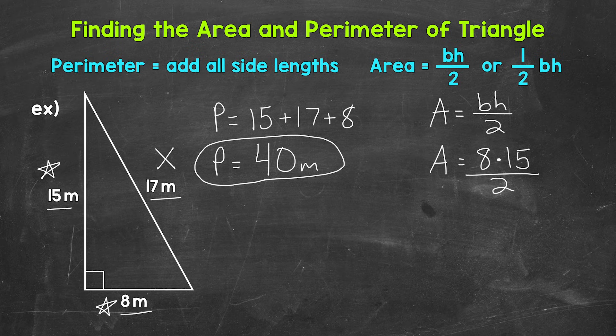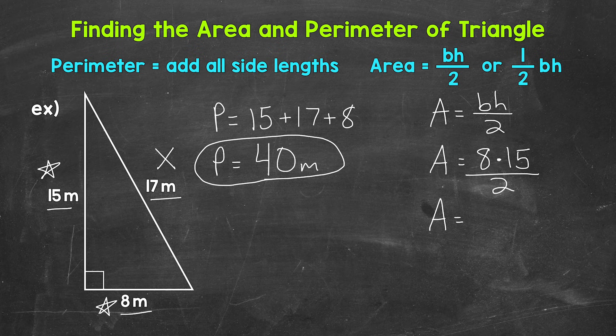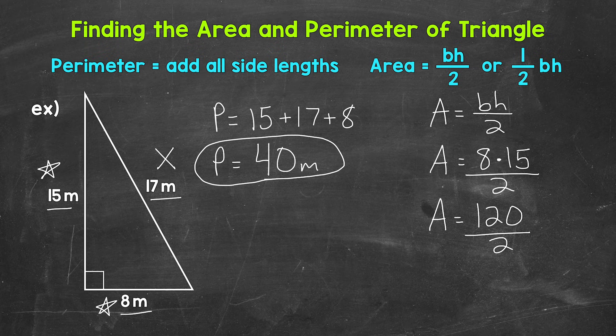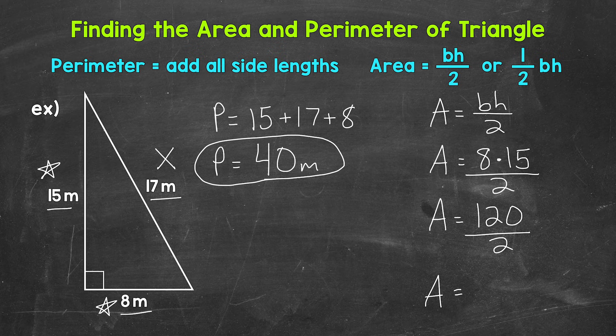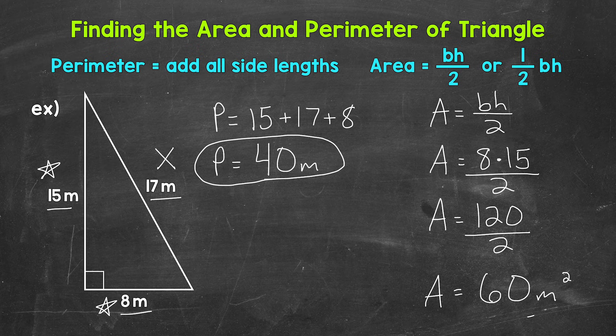Now we can work through this. So let's start with 8 times 15. That gives us 120. So we have 120 divided by 2. 120 divided by 2 gives us a final area of 60 square meters.